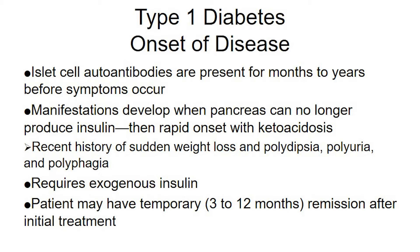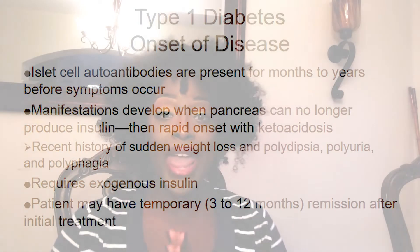For Type 1, the islet cell antibodies are present for months to years before symptoms occur. These patients are usually diagnosed in early childhood — that's where the term 'juvenile onset diabetes' comes from. Manifestations develop when the pancreas can no longer produce insulin, then there's a rapid onset with ketoacidosis. This is very important — ATI, HESI, and NCLEX all love testing on it. Type 1 patients are the ones more likely to go into DKA, diabetic ketoacidosis.